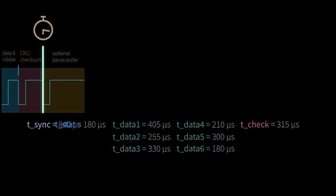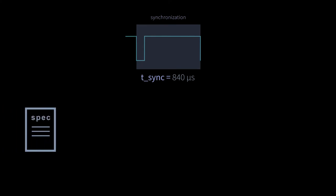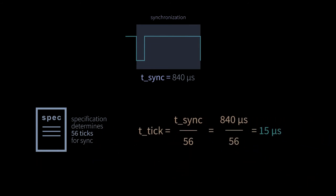For decoding of the synchronization pulse time we take the measured time of 840 microseconds. According to the specification the elapsed time of the synchronization pulse corresponds to 56 ticks. To acquire the time interval for each tick these two values have to be put into relation. By dividing the time value of the synchronization pulse by the number of ticks, we receive an interval time of 15 microseconds per tick. This time per tick serves in the following as a unit for the further decoding of the signal.